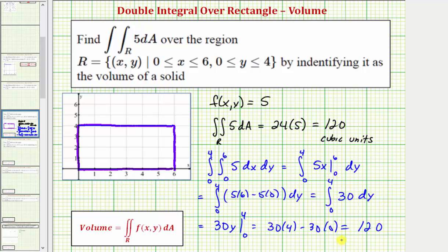Again, this would be cubic units. Just remember that as long as our function f of x comma y, or the integrand function, is non-negative over the region of integration, then we can think of this double integral as the volume of a solid.